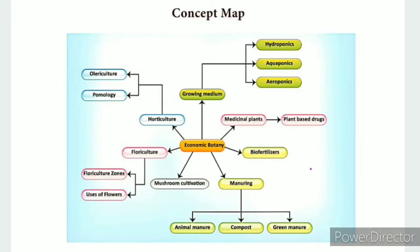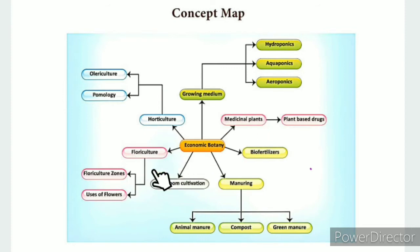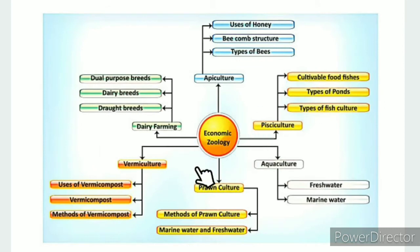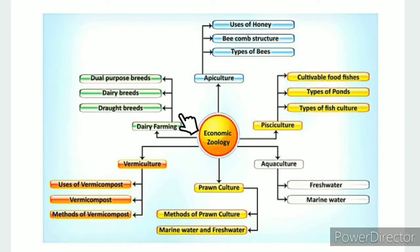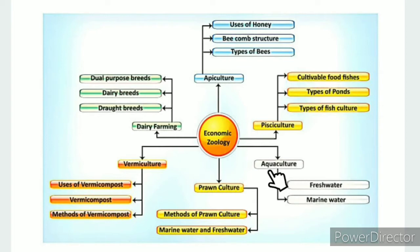In this lesson we have two concept maps. The first concept is Economic Botany, which is plant-related. The second concept map is Economic Zoology, which is animal-related. Aquaculture falls under the animal-related branch. Aqua refers to water — both fresh water and marine water.